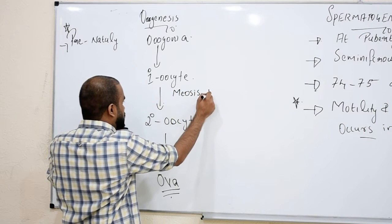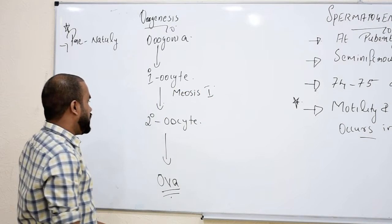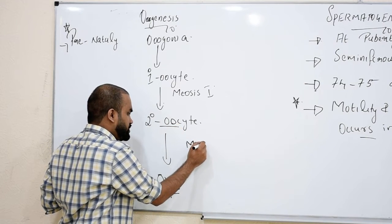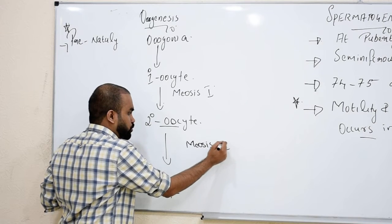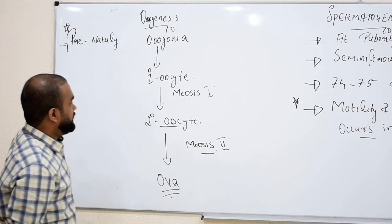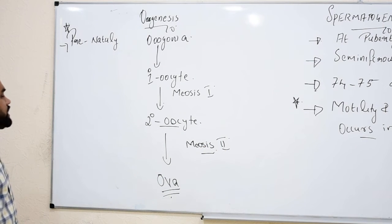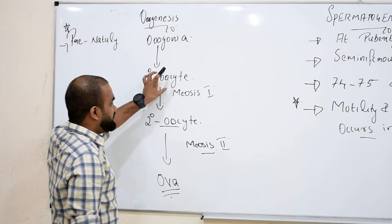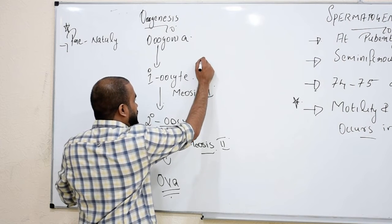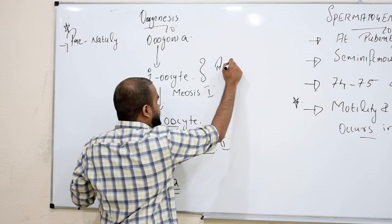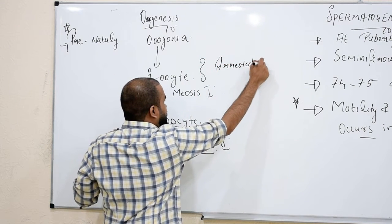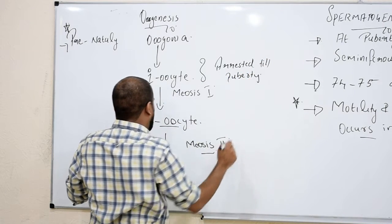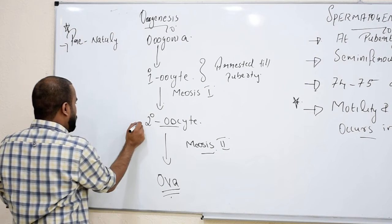Primary oocytes become secondary oocytes by meiosis 1, and secondary oocytes become ova by meiosis 2. An important point: when oogenesis produces primary oocytes, they are arrested — that is, they pause development until puberty. Secondary oocytes are only formed at puberty.